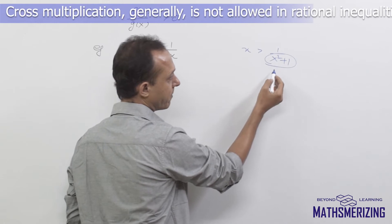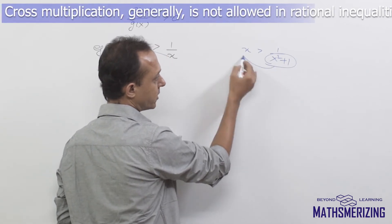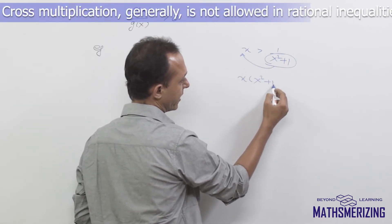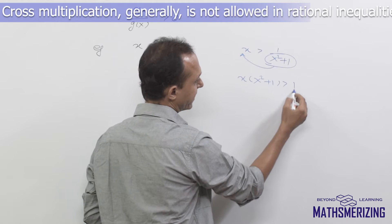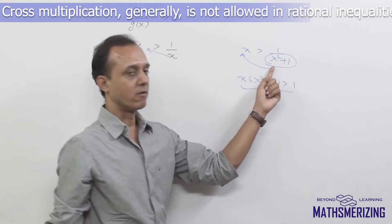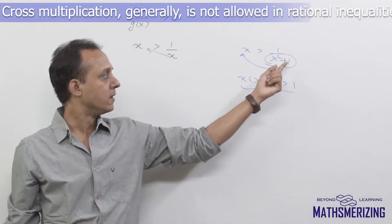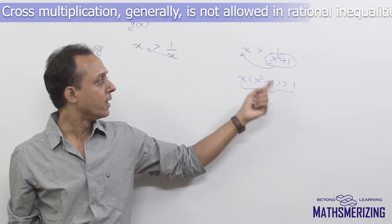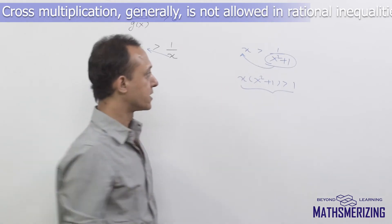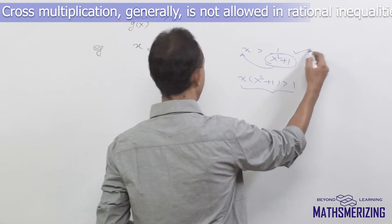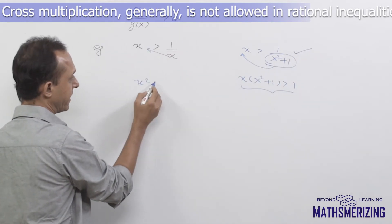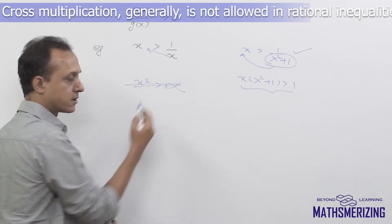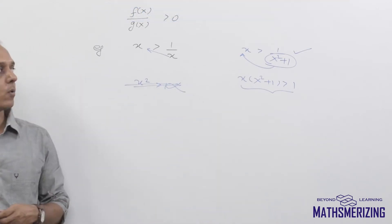When we know that x squared plus 1 is always positive, we can cross multiply. We can write x times (x squared plus 1) is greater than 1, because it is always positive and multiplying by a positive number does not change the sign. But in the original case x is greater than 1/x, cross multiplication is not allowed.